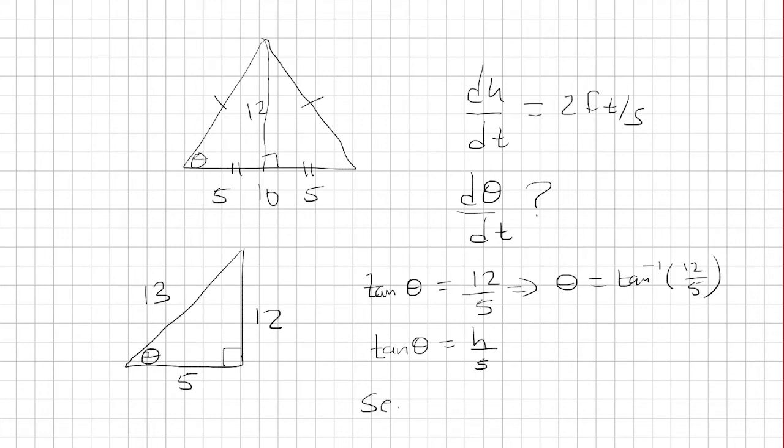Okay, so let's take the derivative of tangent theta. That's just secant squared theta dθ/dt. And then h over 5 is just dh/dt times 1/5.